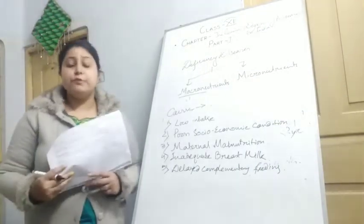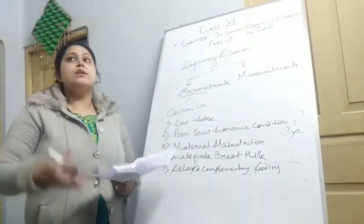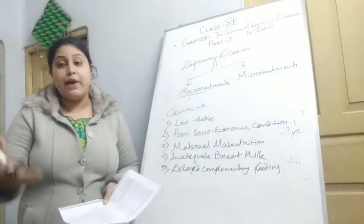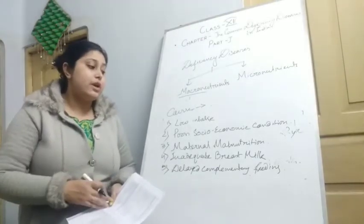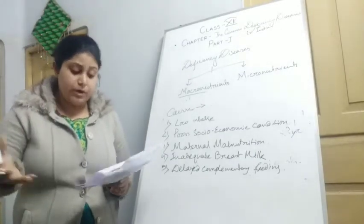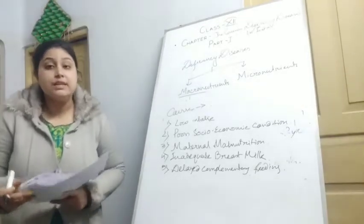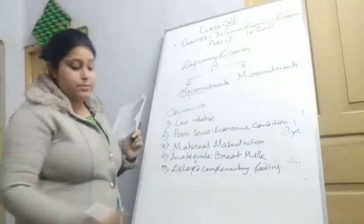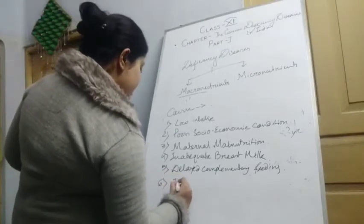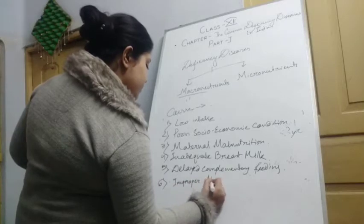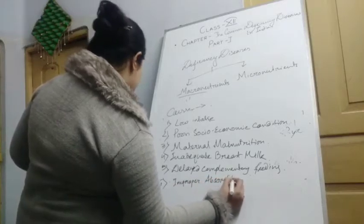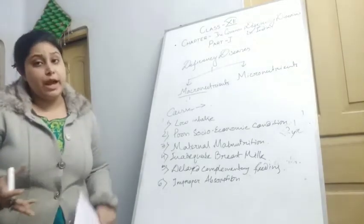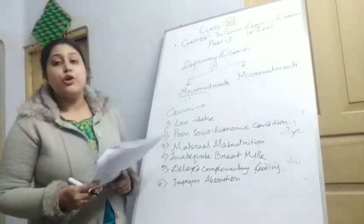After six or seven months, every child should begin complementary foods alongside breast milk — foods like rice and fish. Children who do not get these complementary foods, or who are delayed in receiving them due to economic status, become sufferers of Kwashiorkor and Marasmus. The sixth cause is improper absorption — if the child has any physiological problem, improper absorption of food can occur, leading to Kwashiorkor and Marasmus.